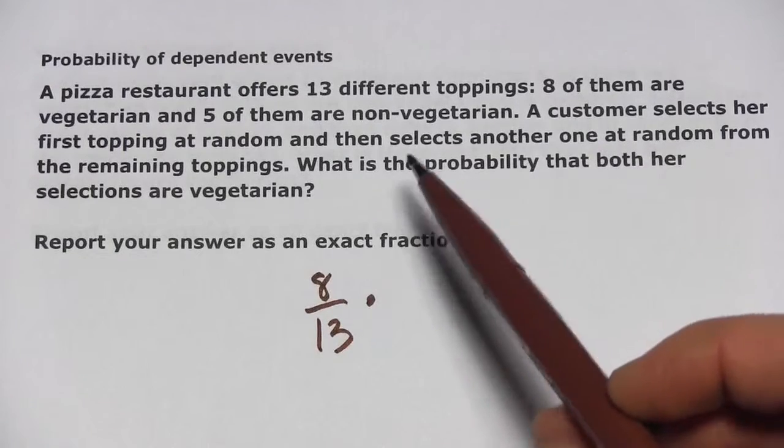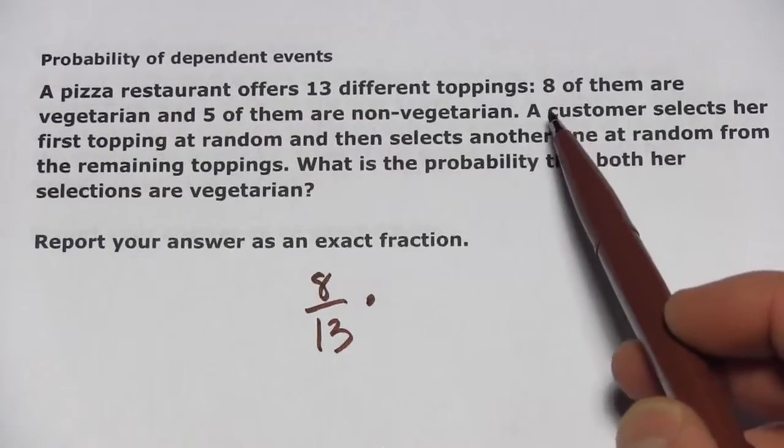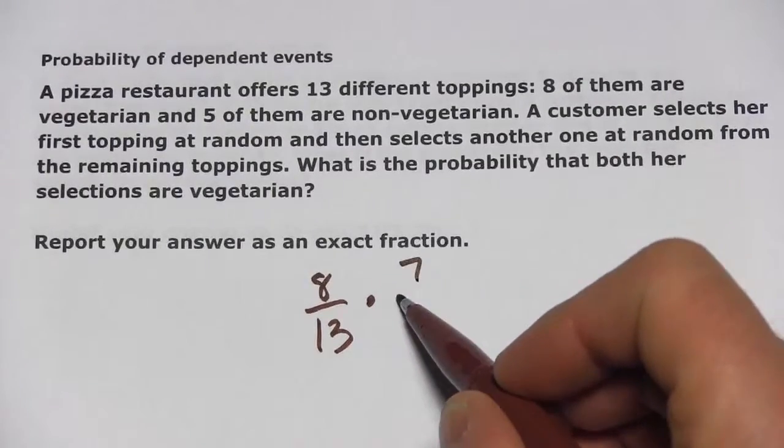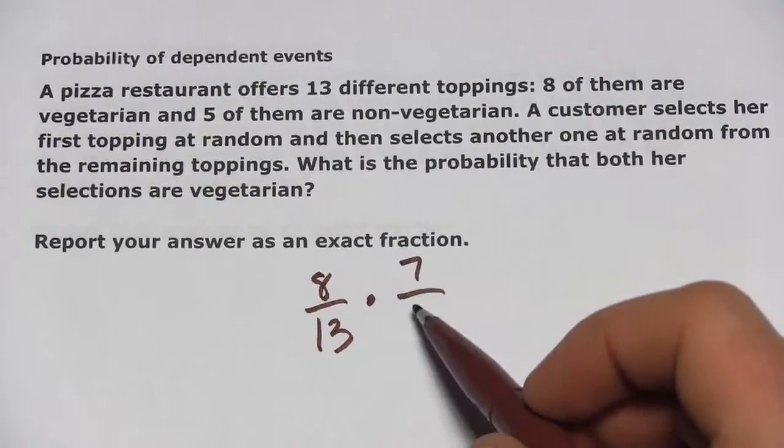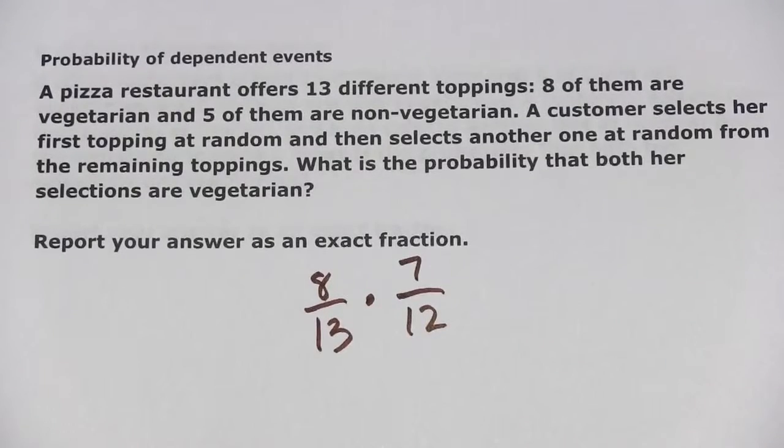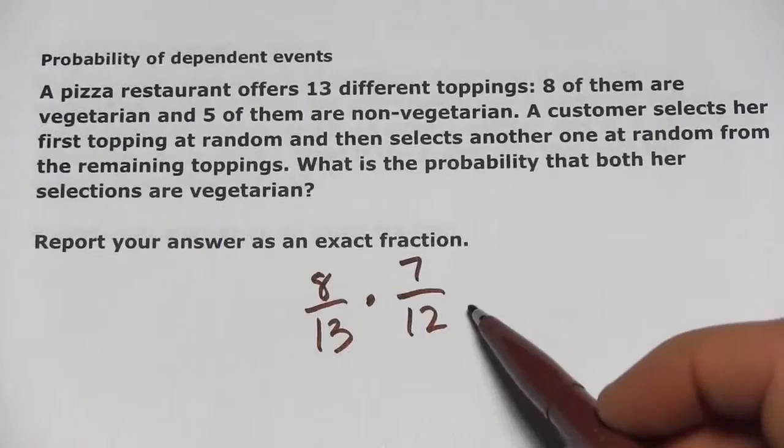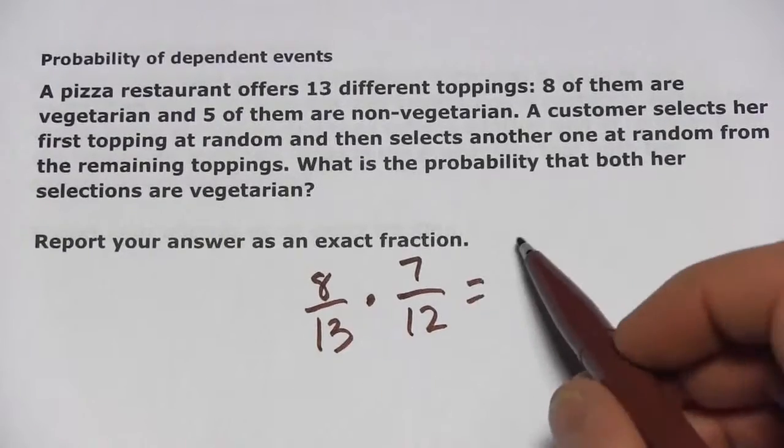When the next selection is made, there are only 12 toppings left and only 7 of them are vegetarian. So, the probability of picking a vegetarian topping randomly the second time is 7 out of 12. Our problem comes down to 8 over 13 times 7 out of 12, and then we just have to do our multiplication.